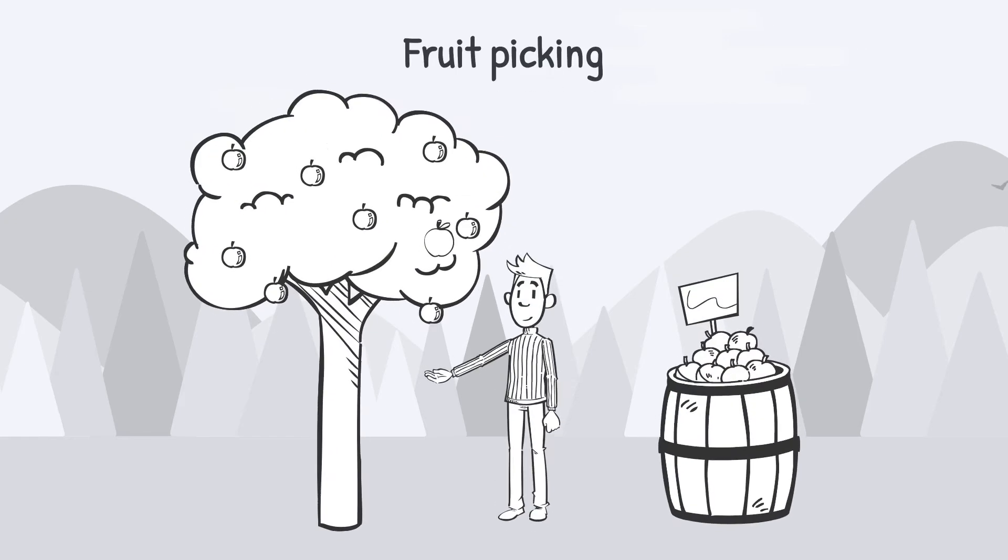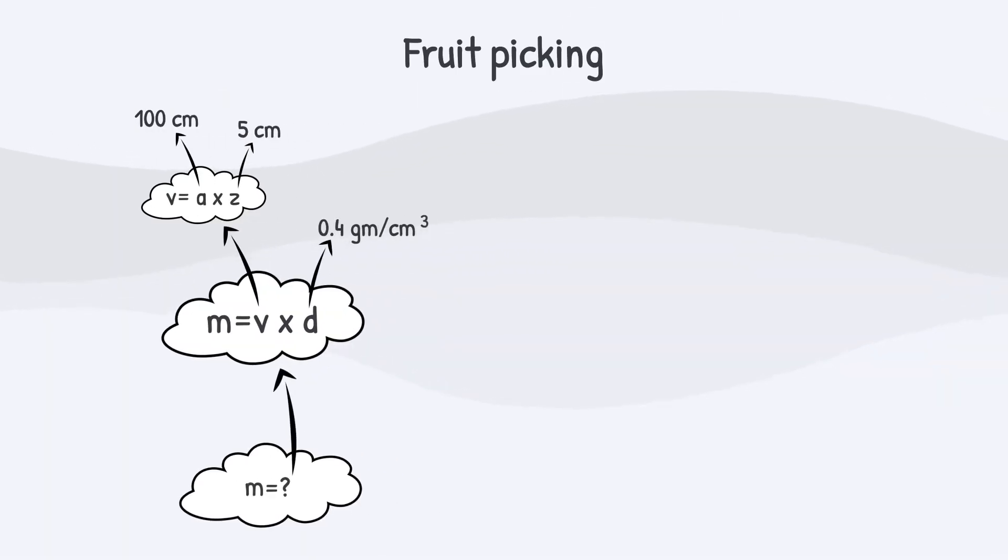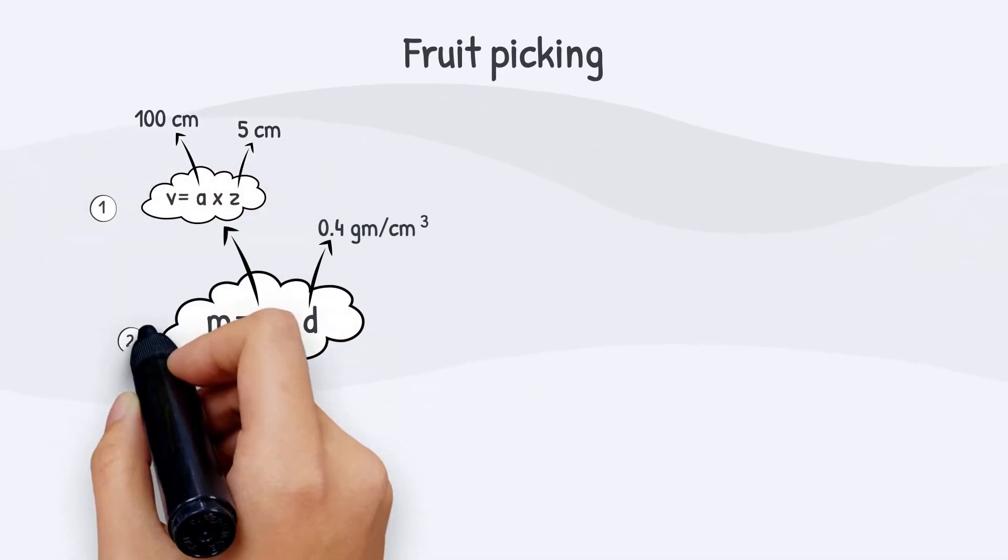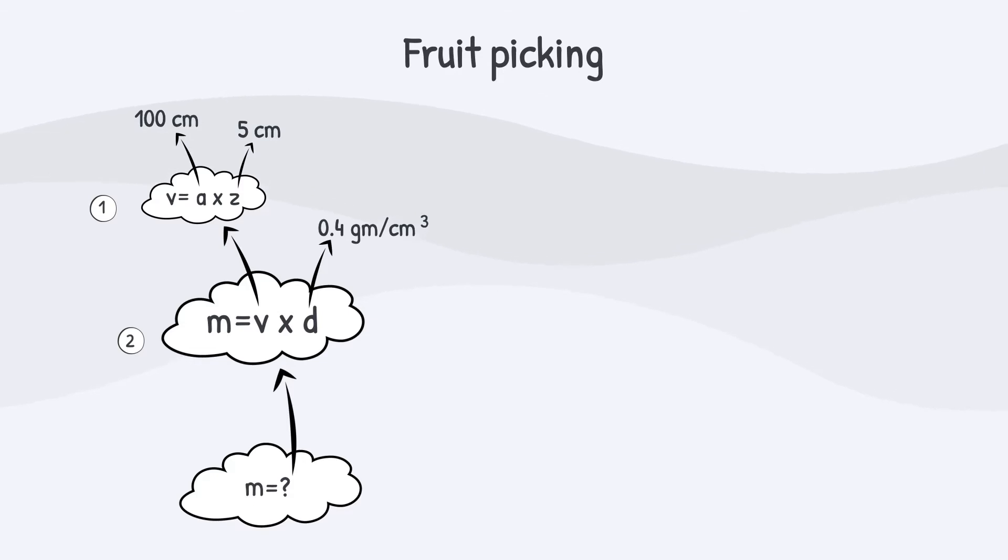Let's move directly to the second step, fruit picking. Starting from the top, give the upper cloud number one and number two to the lower one. In the first line, start the calculations of formula one and finish it.